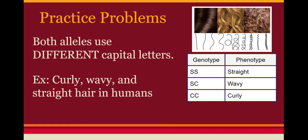Incomplete dominance uses a different notation, which is important for MCAS and AP Biology. You choose different letters to represent the different alleles for the gene. For example, hair texture in humans follows incomplete dominance. If an individual is homozygous for straight hair, I use the letter S — so S-S gives straight hair. For curly, I use C — so C-C gives curly hair. The heterozygote S-C shows a blend of the two: wavy hair.